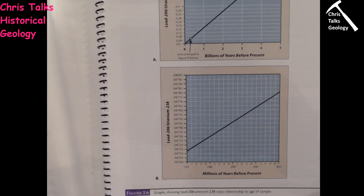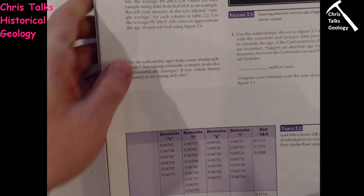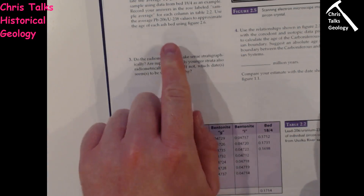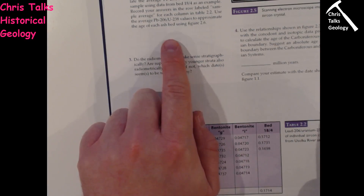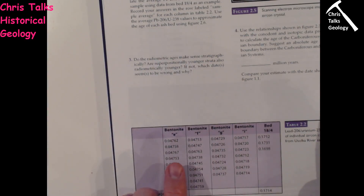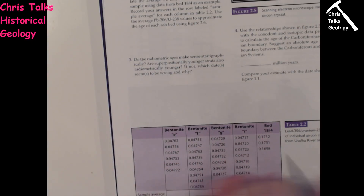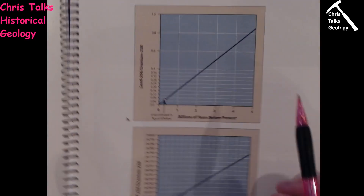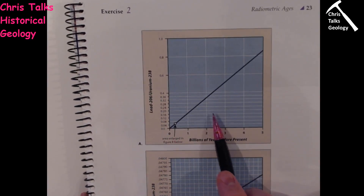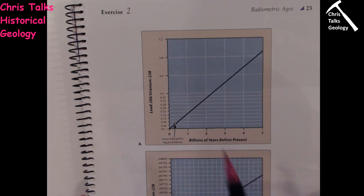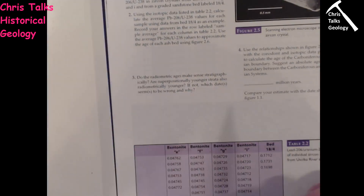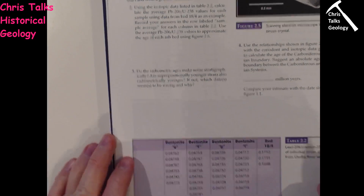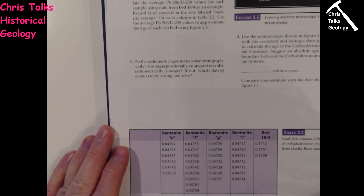So for each of these five samples you're going to produce an average, and then using the graphs on the next page you're going to produce an age and write the ages in the table. Now to be clear, samples E, F, G, and I are going to plot on the lower diagram, while sample 18-4 is going to plot on the upper diagram — so don't get caught out by that. We've calculated the averages and then used those averages to come up with an age for each of the five layers.